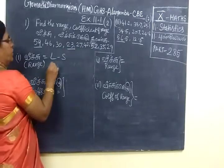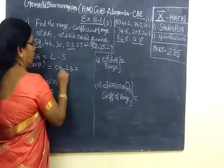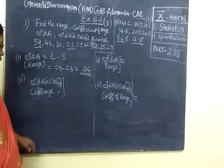So, this is the range. It is equal to 59 minus 23. So, 36 is the range.